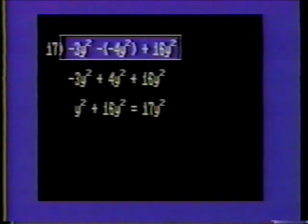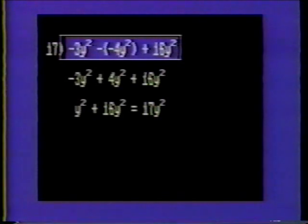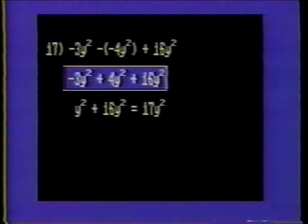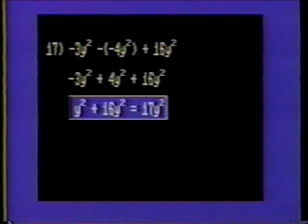Number seventeen: negative three y squared minus negative four y squared plus sixteen y squared. Remember that a minus sign preceding a minus sign makes the term positive. Thus, we have negative three y squared plus four y squared plus sixteen y squared. Adding negative three y squared to four y squared is y squared. And y squared plus sixteen y squared is seventeen y squared.